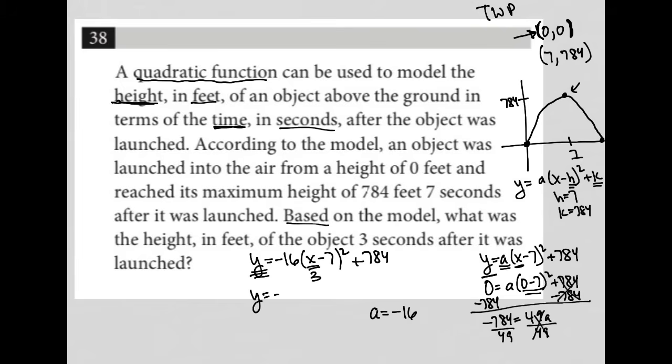So I have y equals negative 16. Let's just do the math. 3 minus 7 is negative 4. So negative 4 squared plus 784. Order of operations tells me to do my exponents first.